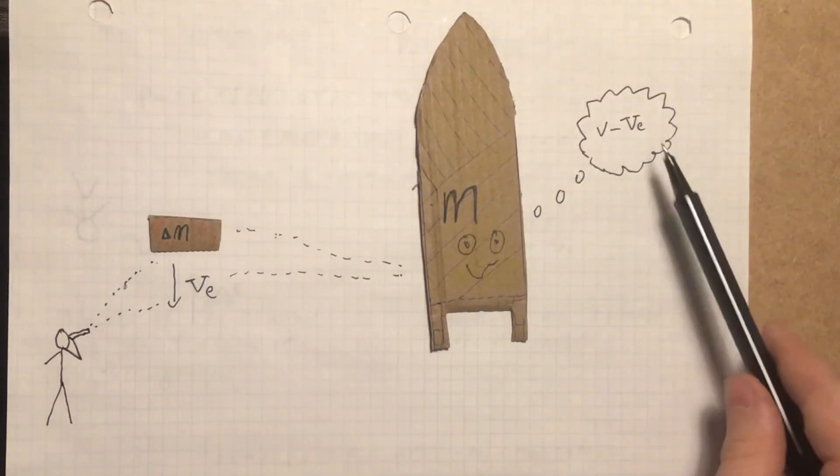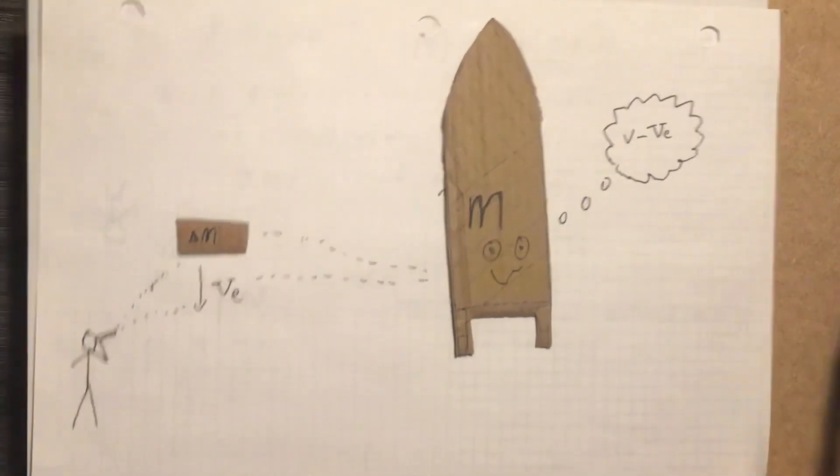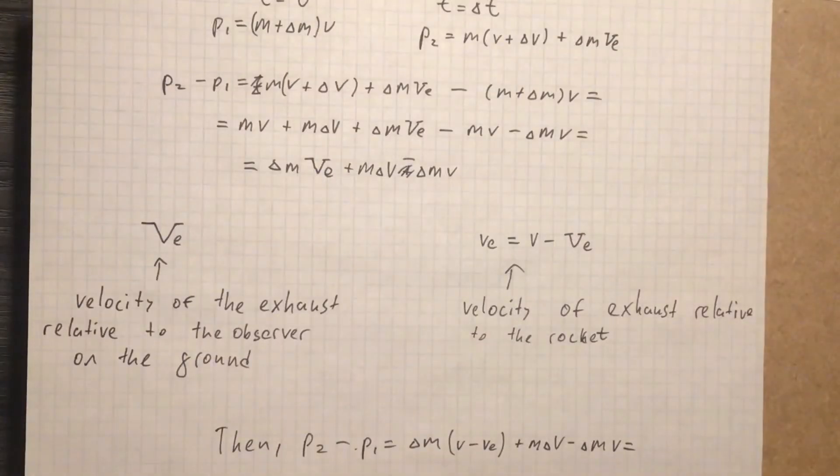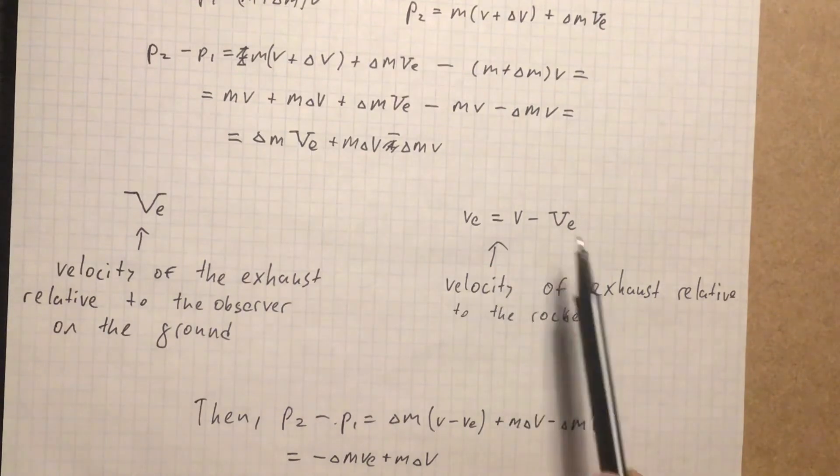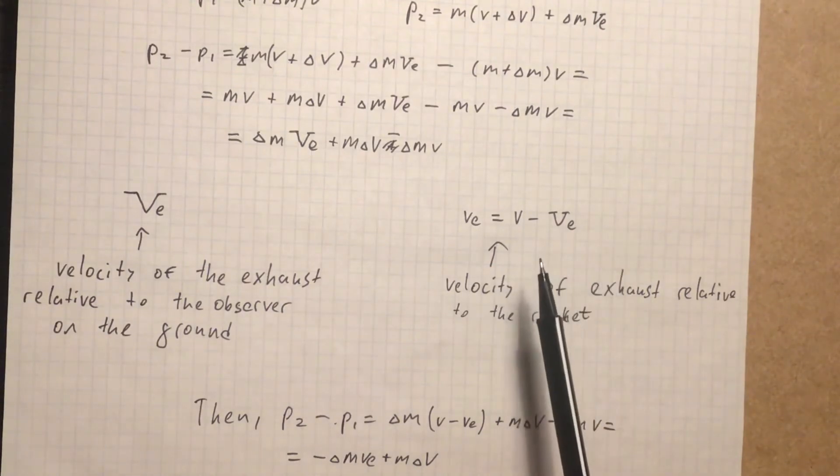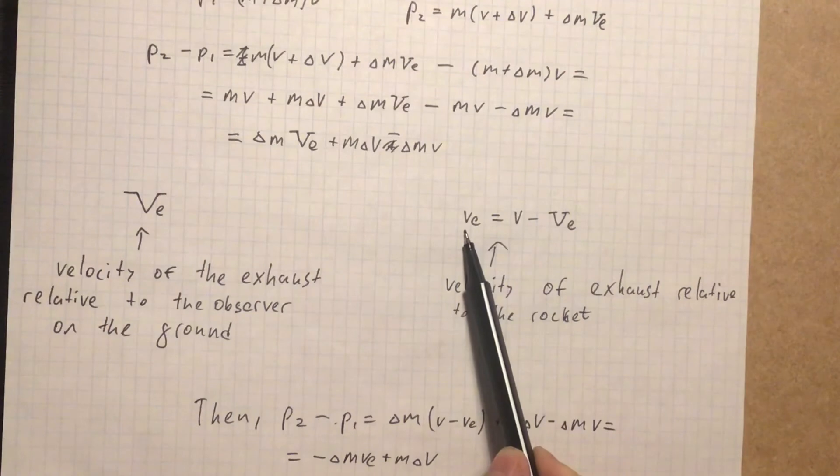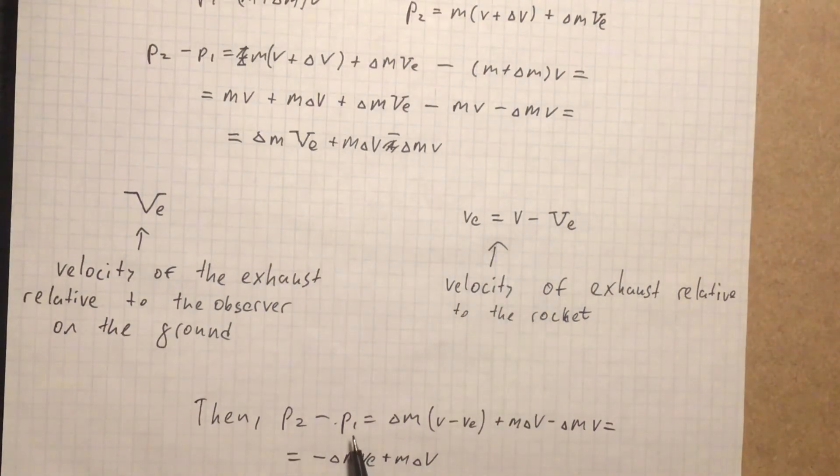And getting back to our calculation, we can see the difference of momentum. If we substitute v_e with v minus v small e, we will get that p2 minus p1 will be equal to minus delta m v_e plus m delta v.